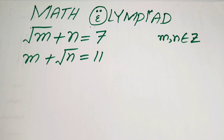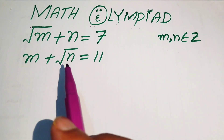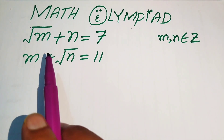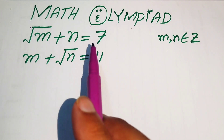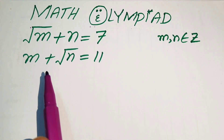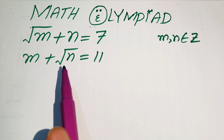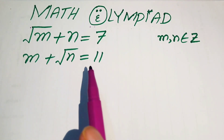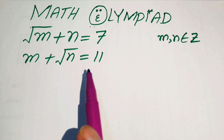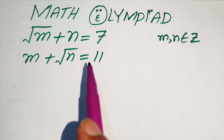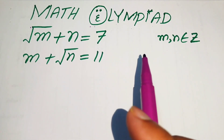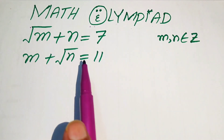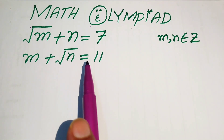Hello everyone, welcome. We solve this Math Olympiad algebra problem. We have: square root of (m plus n) equals 7, and m plus square root of n equals 11. We solve these two equations to find the values of m and n.